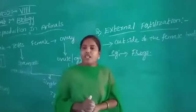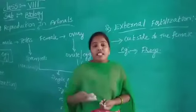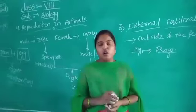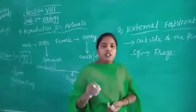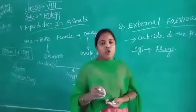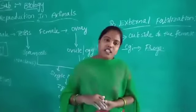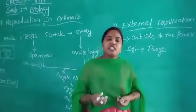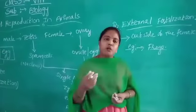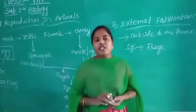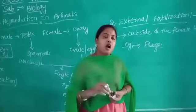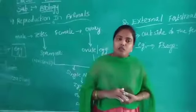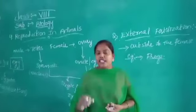This is about today's class. What we discussed today: what is fertilization, and what are the types of fertilization. Fertilization has two types. First, internal fertilization — which takes place inside the female body, example: human beings. Second, external fertilization — which takes place outside the female body, example: frogs. In the next class, we will discuss about the life cycle of the frog.